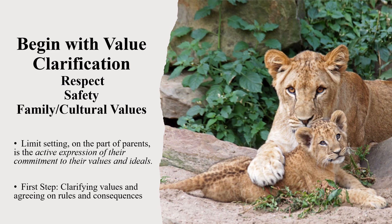If parents don't have a clear set of values, it's a good place to start with respect and safety. Many times there are family and cultural values — whether it's attending a religious service once a week, attending a family meal, visiting with a grandparent — where the expectation is that we're going to do this regularly and we'd like you to be involved and participate in a respectful way. So the first step with parents is clarifying values and having the parents agree upon rules and consequences.